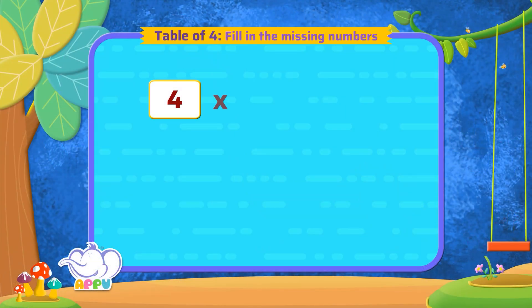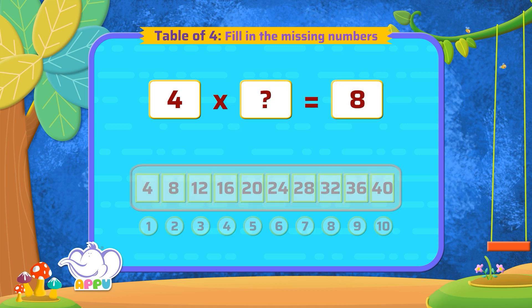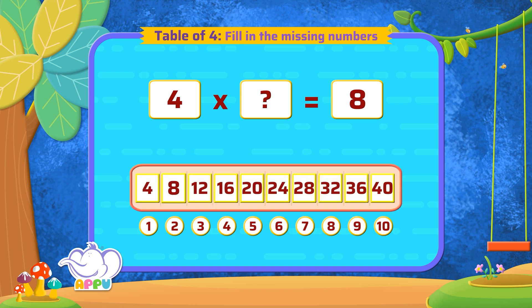4 multiplied by a number is 8. What is the missing number? To get 8, we have to skip count 4 twice. So the missing number is 2.